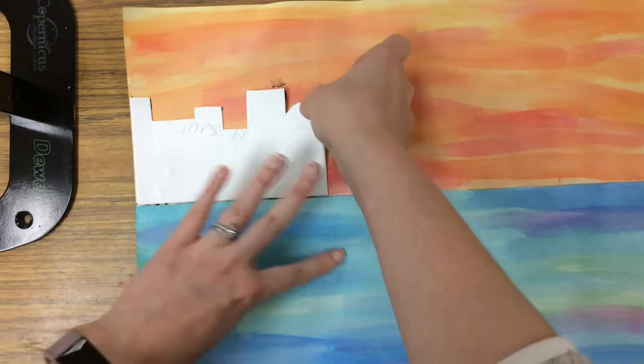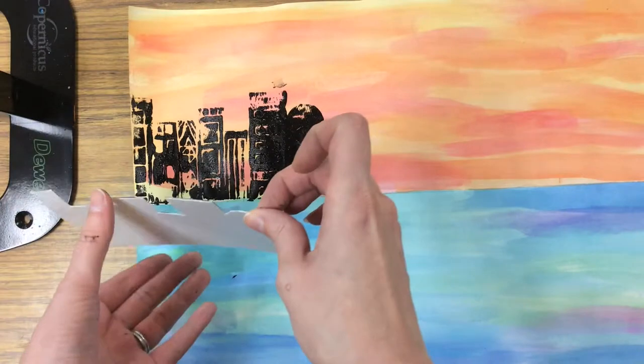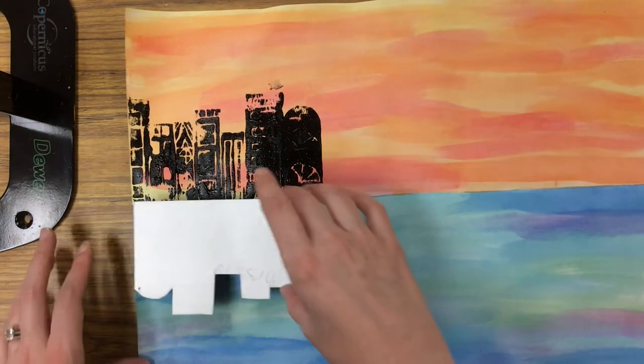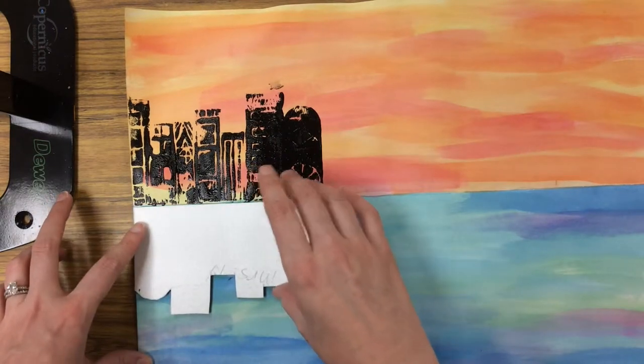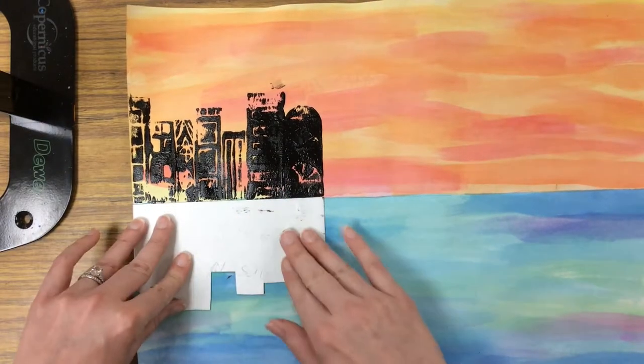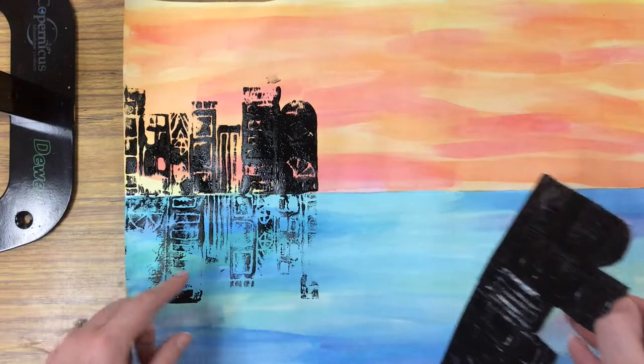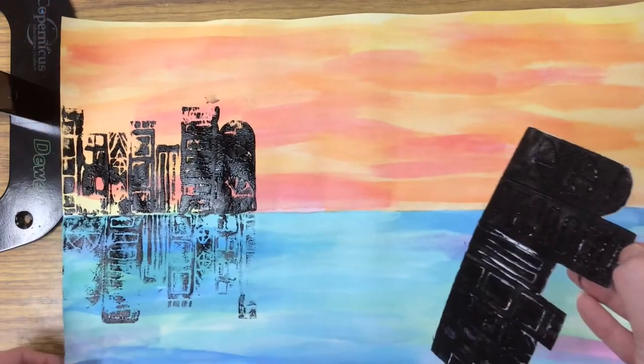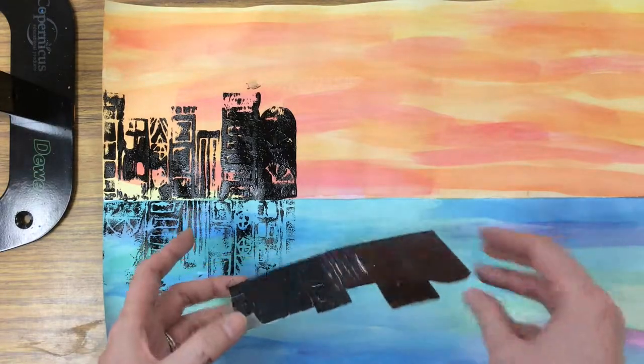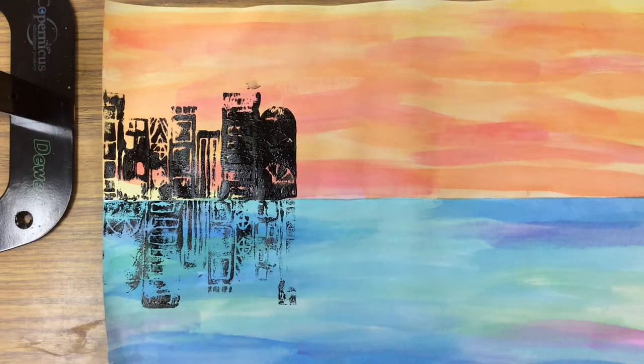To make it look like a reflection on the water that's a little bit less bold, a little bit more blurry, I'm going to flip it over and use it gently to get some of that black, but it's going to be a lot more faded so it looks more like a reflection. I'm just going to keep doing this two more times across until I fill up my skyline. I'm going to add more black and do this two more times.